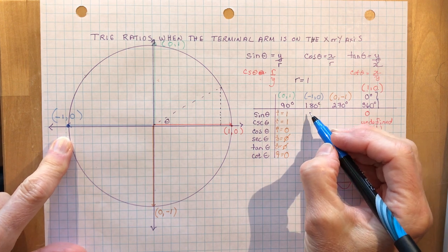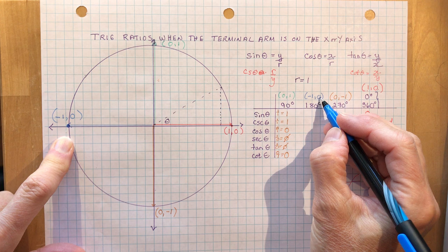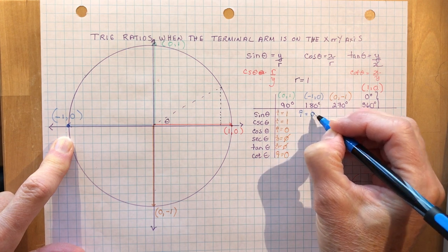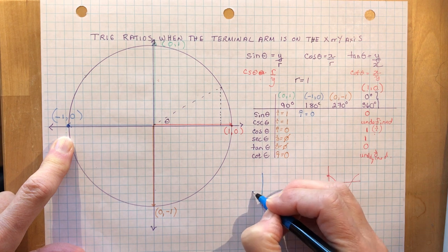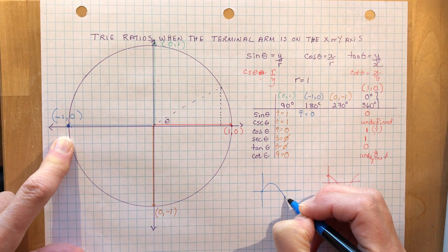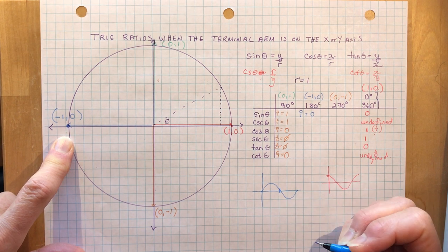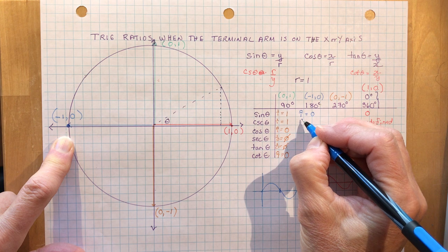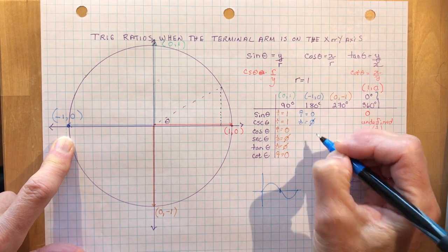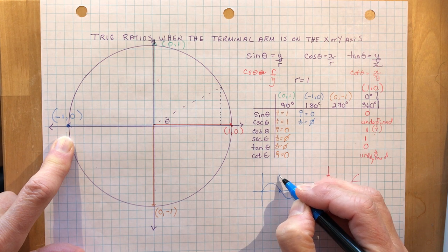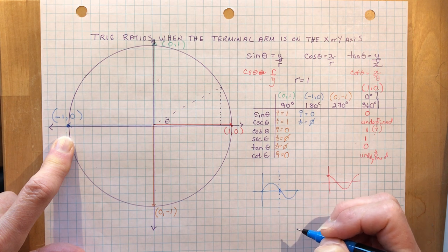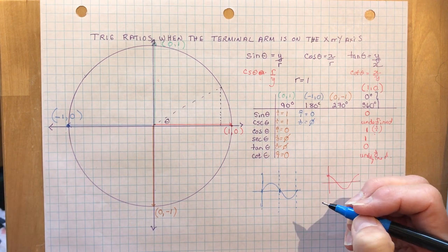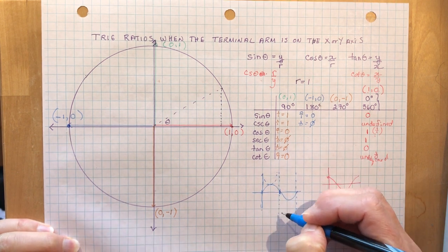At 180 degrees, sine is Y over R: that's 0 over 1, which is 0. Looking at the sine graph, the sine of 180 degrees is indeed 0. The cosecant is 1 over 0, which is not defined — so when you go to draw the cosecant graph, you'd have to put an asymptote there because it doesn't exist at 0, 180, or anywhere the sine is 0, since 1 over 0 is undefined.